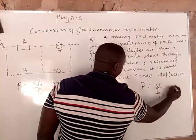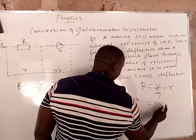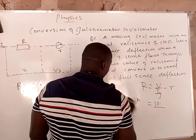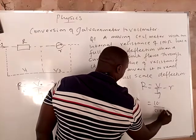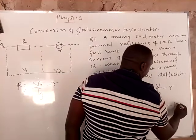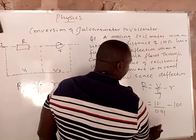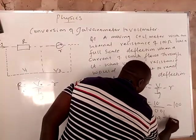You have your voltage which is 10 volts, 10 divided by 0.01 minus the internal resistance or resistance of the galvanometer which is 100. 10 divided by this should give you 1000 minus 100, therefore the value of R is 900 ohms.